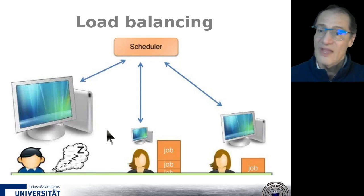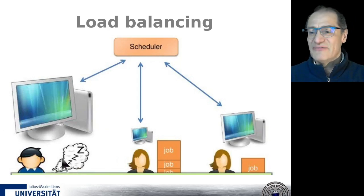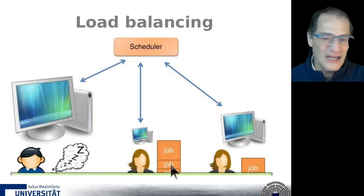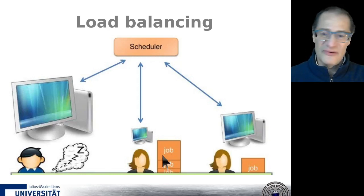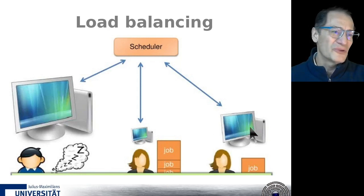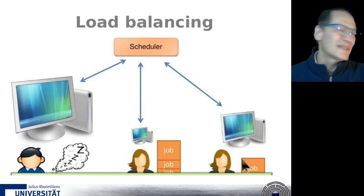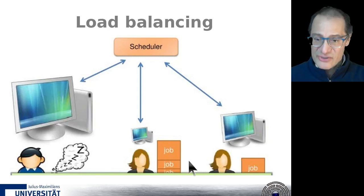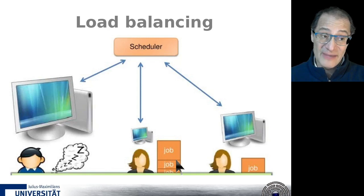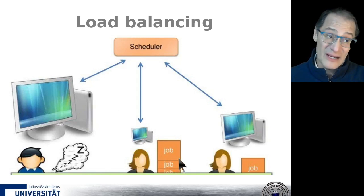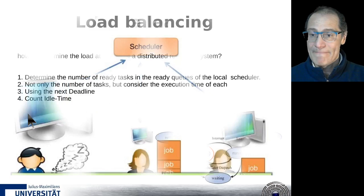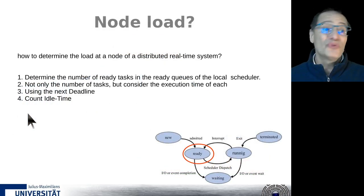Now we have the situation of load balancing. Maybe we have a very powerful computer doing almost nothing, a small computer with many jobs requiring a lot of effort, and another computer with only one job. This is not an optimal distribution, so we should consider migrating jobs - perhaps ones not yet activated, or already running ones requiring preemption - to computers with more idle time.